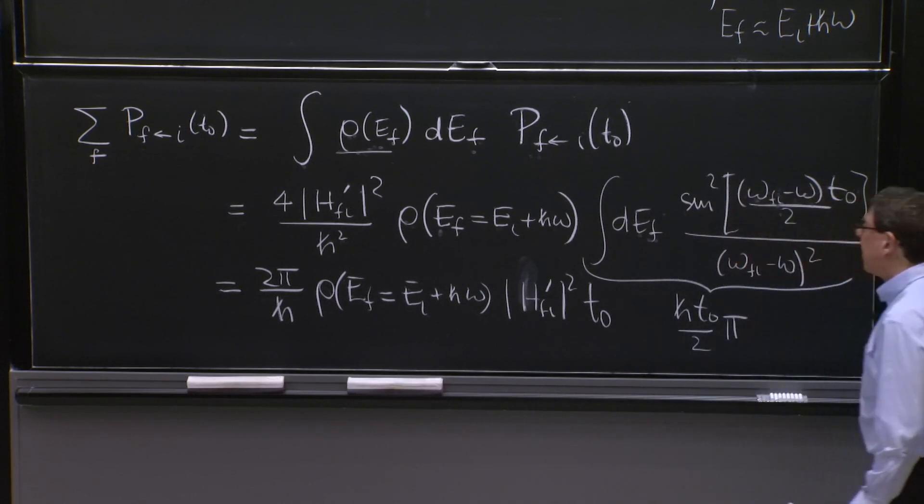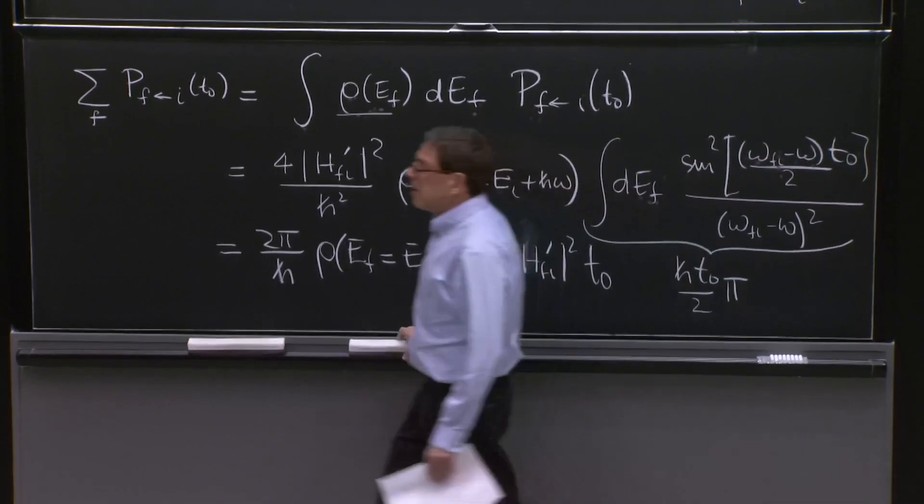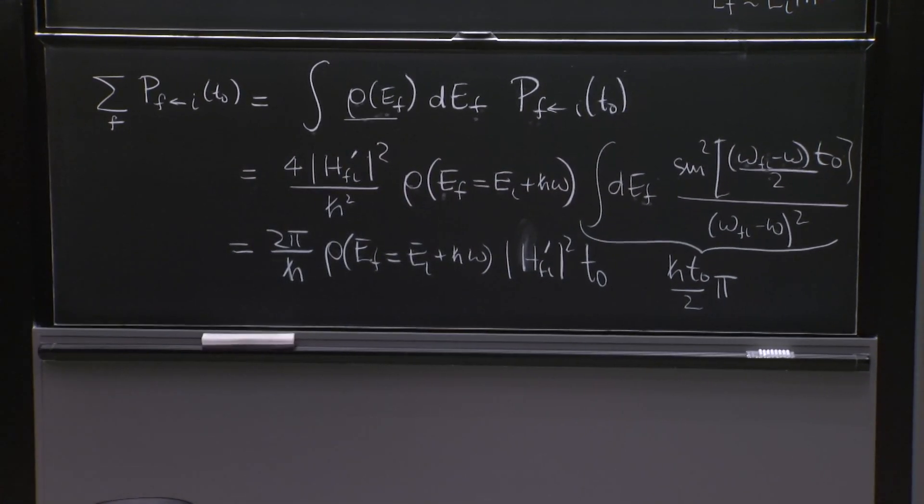Rho at ef equal ei plus h omega hfi prime squared times t naught. That's all that is left, which is great because that is our Fermi's golden rule.